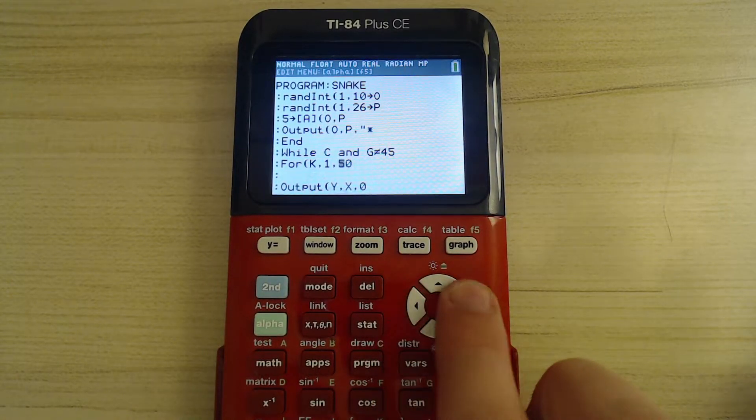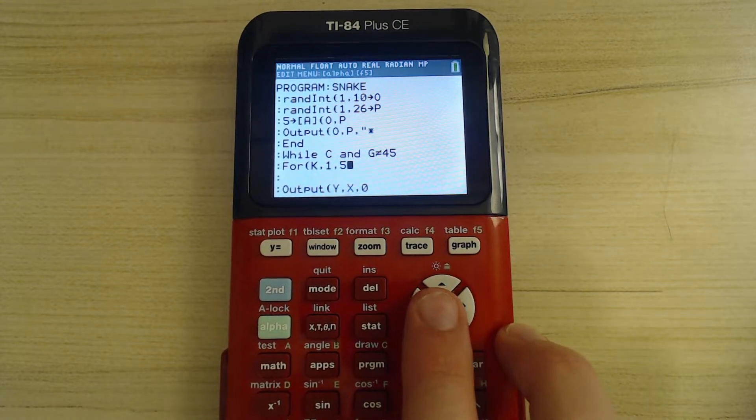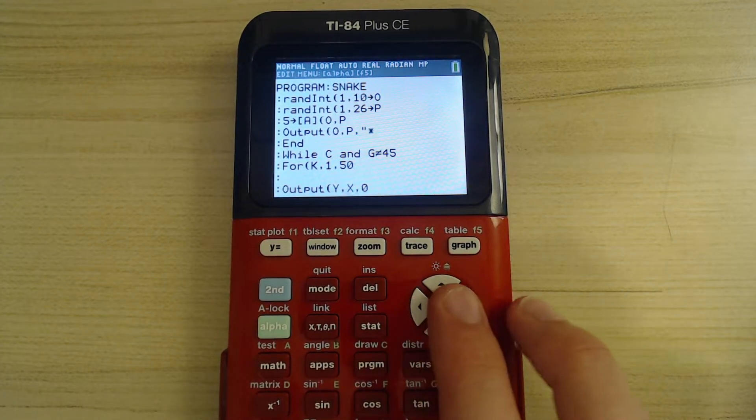And this number right here basically determines the speed of the snake. The higher the number, the slower the snake.